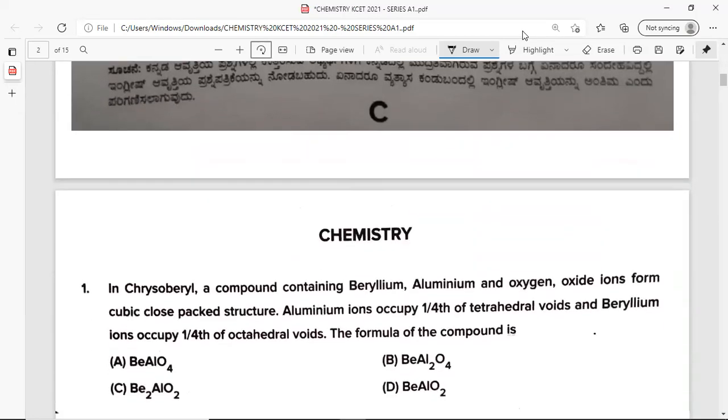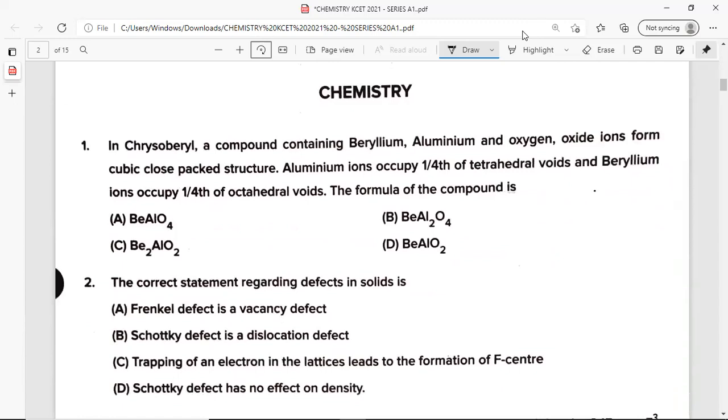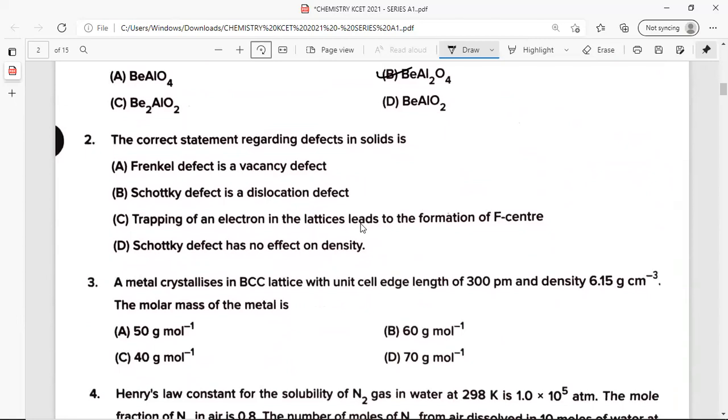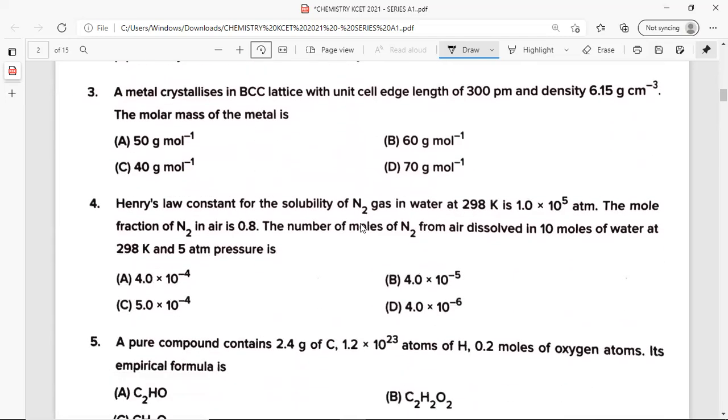Question number 1: In chrysoberyl, a compound containing beryllium, aluminum and oxygen, oxide ion forms cubic closed-packed structure. Aluminum ion occupies 1 by 4 the tetrahedral voids and beryllium ion occupies 1 by 4 the octahedral voids. The formula of the compound is option B, BeAl2O4. Question number 2: The correct statement regarding defects in solid is option C, trapping of an electron in the lattice leads to the formation of F-center. Question number 3: A metal crystallizes in BCC lattice with unit cell edge length of 300 picometer and density 6.15 gram per centimeter cube. The molar mass of the metal is option A, 50 gram per mole.